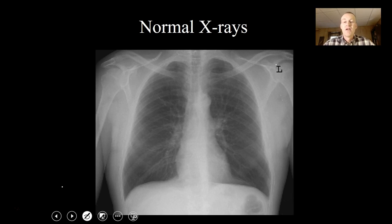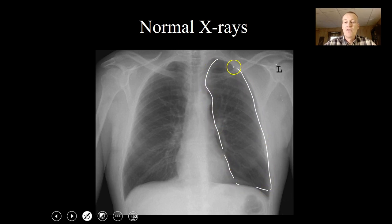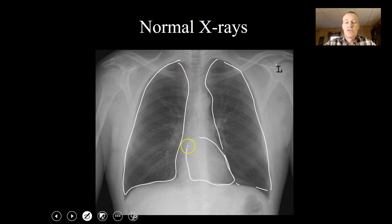Normal x-rays are probably what you're most familiar with. When I show you these, I want you to get a little review of the bones — you will have a test on some of these, so it's important to be able to identify them all. In this normal x-ray, you can see where the lungs would be — the left lung and right lung. Normal lungs should be clear inside.